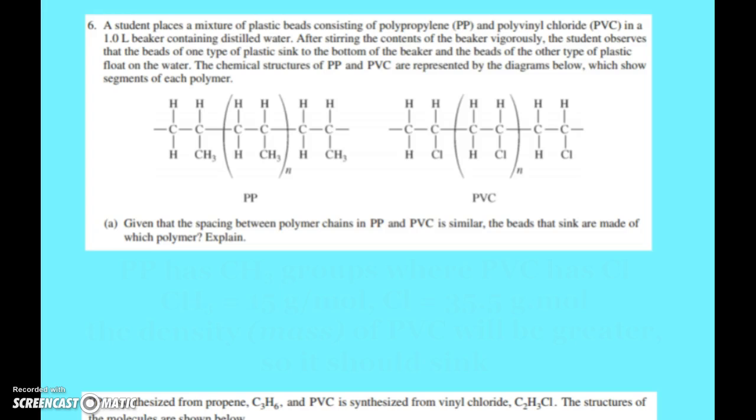And here we see the structures of polypropylene and PVC shown in the diagram. So question A says, given that the spacing between polymer chains, polymers are long-chained molecules that have a bunch of monomers linked over and over again. And so it just says the spacing between them is similar, that means one of them isn't smooshed and way more dense than the other. So which ones are the beads that sink? And I kind of just mentioned the word that we should think about. When you're talking about will something sink or float in water, you should be thinking density. When something is less dense, it will float, more dense sink.